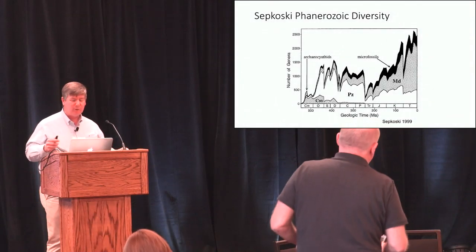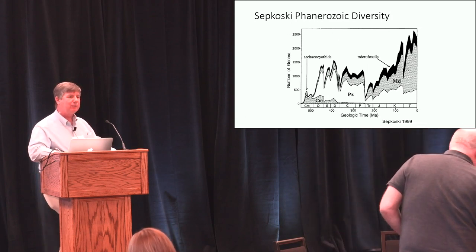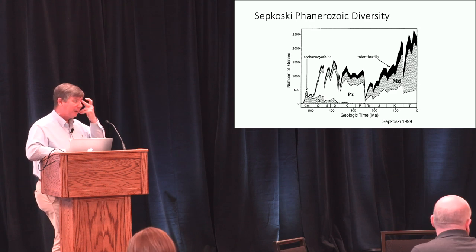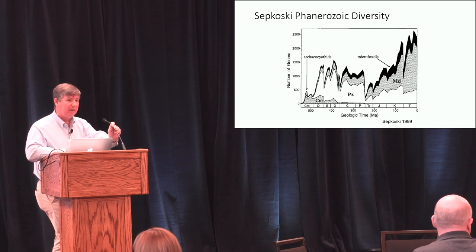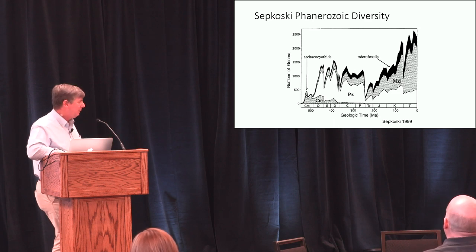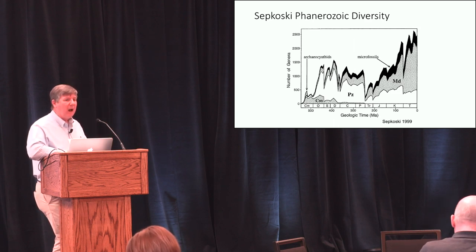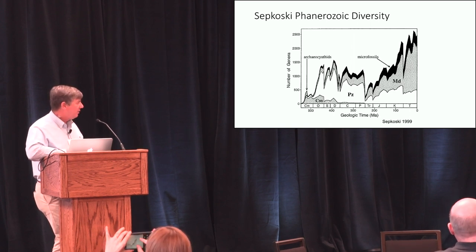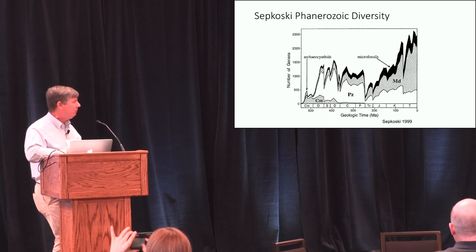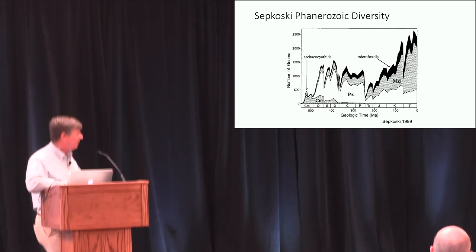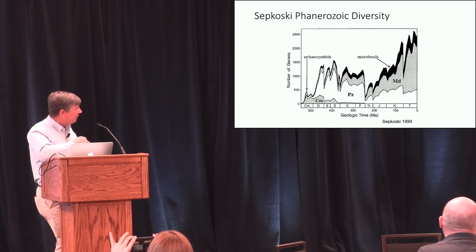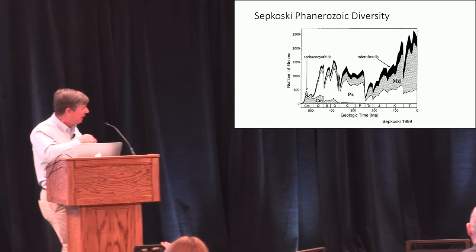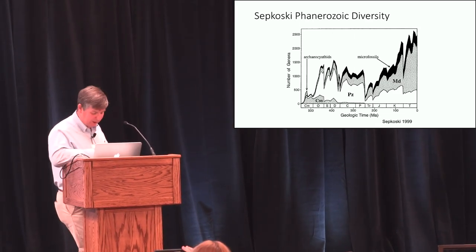This is a graph of the diversity of fossilized marine organisms through the last 600 million years. It was initially compiled by Jack Sepkoski, one of the early participants in SFI, by collecting records of the first and last occurrences of genera — groups of species — through the fossil record of the last 600 million years. You can see lots of divots. Today is up here and the Cambrian explosion is back here on the left side.